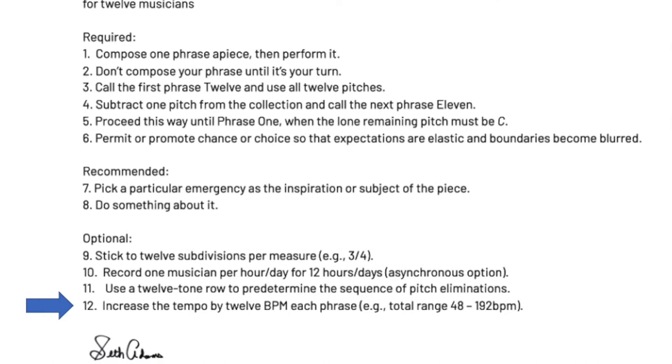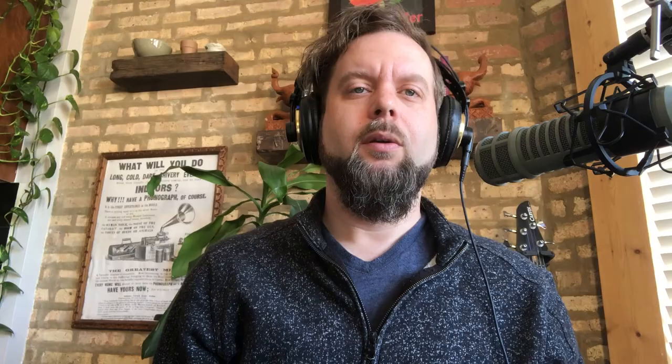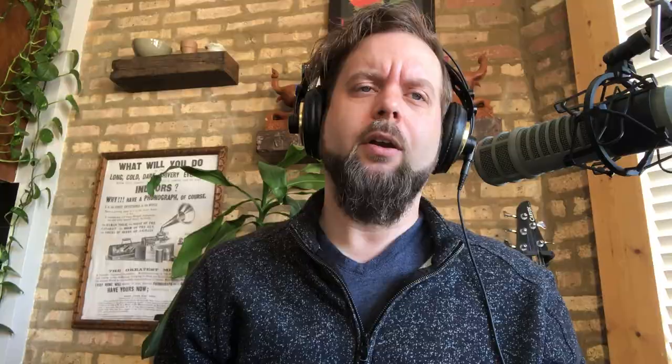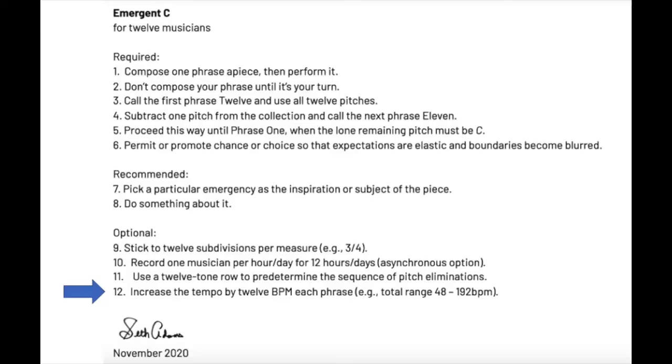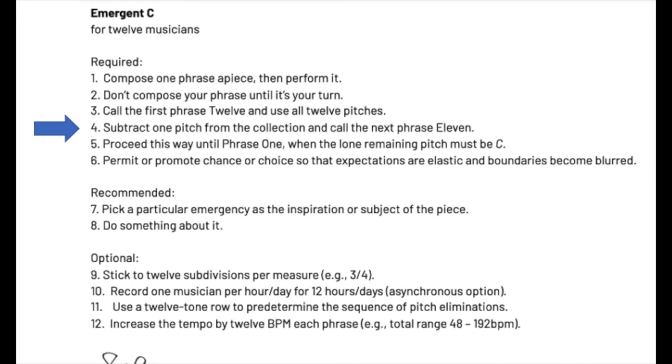Number twelve: increase the tempo by 12 beats per minute each phrase — for example, a total range of 48 to 192 beats per minute. We didn't do this either, although I did create a tempo map on our click track that generally gets faster up until the second-to-last phrase. Do whatever you want with the tempo. Here is one option that gives yet another instantiation of the magic number 12 — in addition to the 12 composers, 12 performers, 12 days of recording, 12 pitches going down to 1, and 12 subdivisions per measure. You can download the PDF at the link below. I hope you do, and I would love to hear your rendition of Emergent C. Share it in the comments. Please like and subscribe to stay up to date with the latest from the TDO. See you next time.